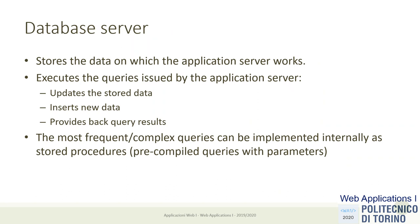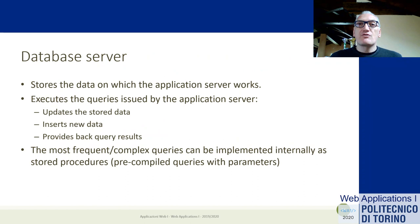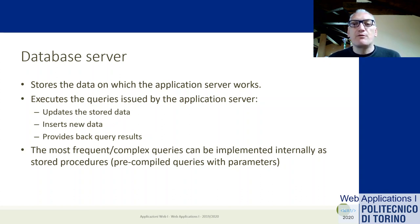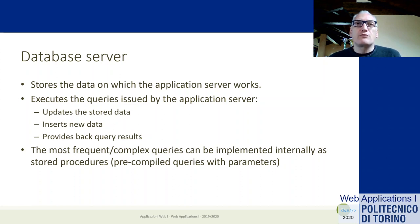Let's go down to the third level — the bottom level of our pyramid — which is the database server. The database server, as the name says, stores the data that the application server needs. The application server can provide you with an HTML file of your email messages, but how can the application server know which emails you received or who your contacts are? There needs to be a data storage somewhere that stores the information the application server needs to complete the web page.